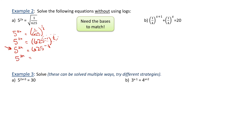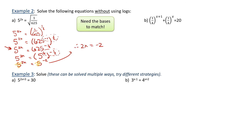So we have 5 to the power of 2x equals 625 to the power of negative 1/2. How can I write 625 with a base of 5? That's 5 to the power of 4, which is 625. Using the power of a power law, 4 times negative 1/2 is negative 2. So we get 5 to the power of 2x equals 5 to the power of negative 2. Now that my bases match, I can ignore them and just set the exponents equal: 2x equals negative 2. Divide both sides by 2, and x equals negative 1.